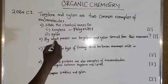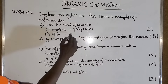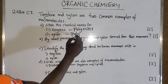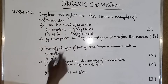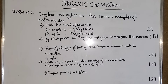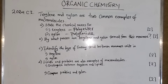The chemical name for nylon is polyamide. It is a polyamide because it has an amide linkage. Now there is another question: by what process are terylene and nylon formed from their monomers?